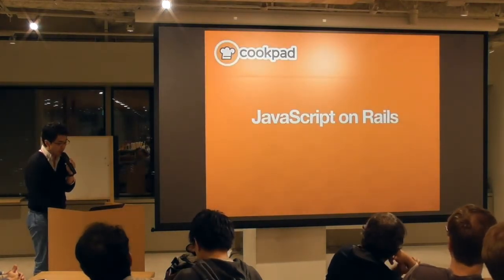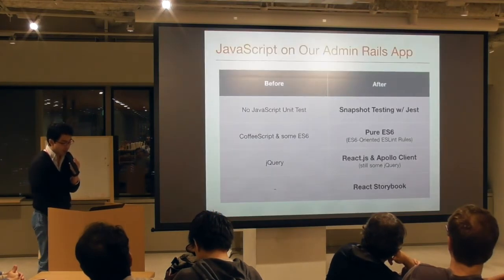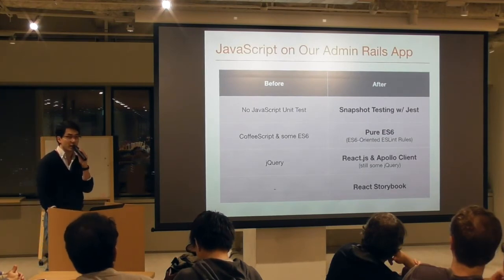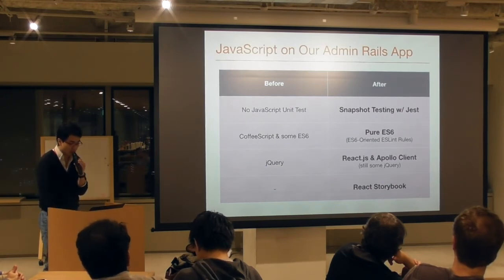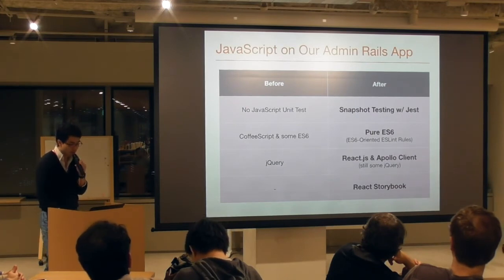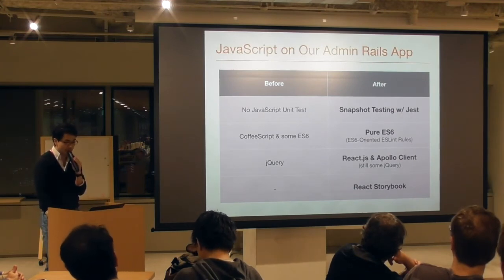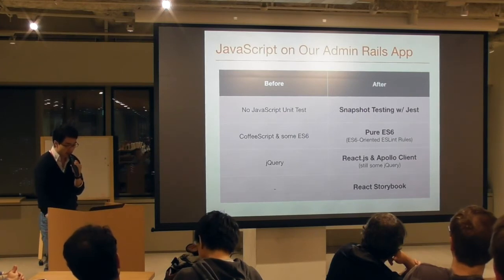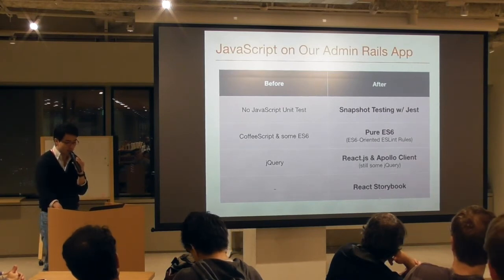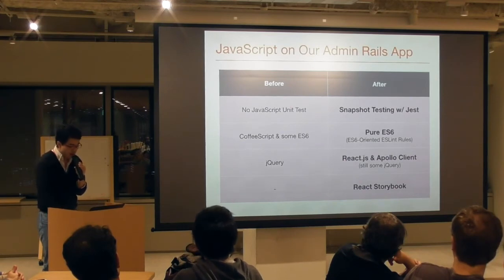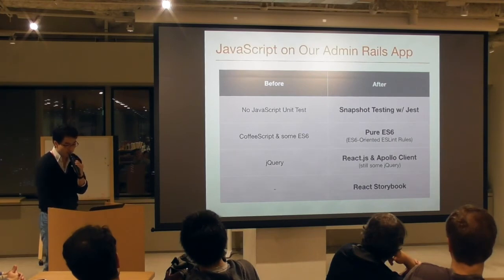How about JavaScript? We enhanced a lot of things in JS too. This shows the before and after of our refactoring. We introduced snapshot testing with Jest — this is like Karma. We replaced all CoffeeScript with pure ES6, and updated ESLint rules accordingly. We still rely on jQuery but introduced a migration path to React and Apollo. Apollo is a client library to bind GraphQL data and React. Apollo is not opinionated about Vue frameworks, so you can use Apollo with Vue, Ember, and Angular. We also introduced React Storybook for behavior-driven development.